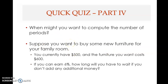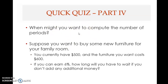Welcome back to part 11 of Chapter 5. The first question is: when might you want to compute the number of periods? This is when you want to solve for the number of periods in a simple time value of money problem — when you know the other elements but you do not know the term. You know the present value, the future value, and the interest rate, but you do not know the term. Then you would use this method to solve for the unknown number of periods.